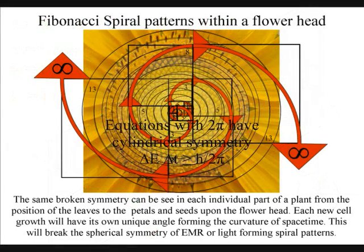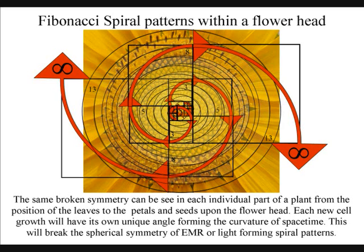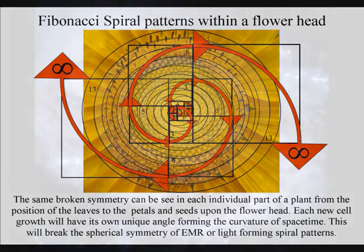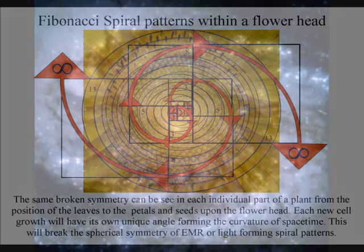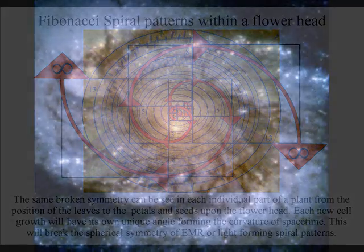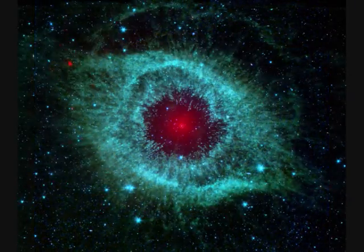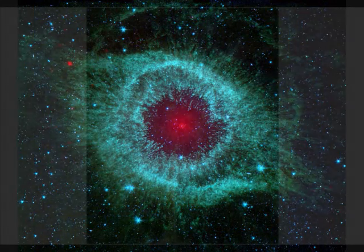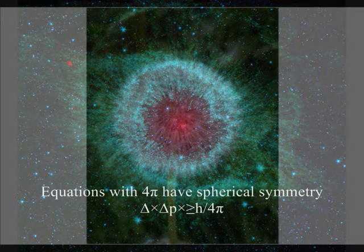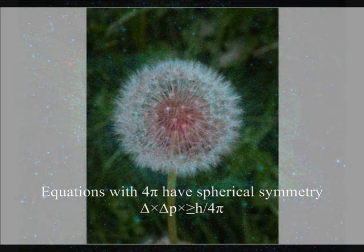The same broken symmetry can be seen in each individual part of a plant, from the position of the leaves to the petals and seeds upon the flower head. Each new cell growth will have its own unique angle, forming the curvature of space-time. Therefore we see the same patterns in plant life as we do in deep space, formed by the same universal geometry.